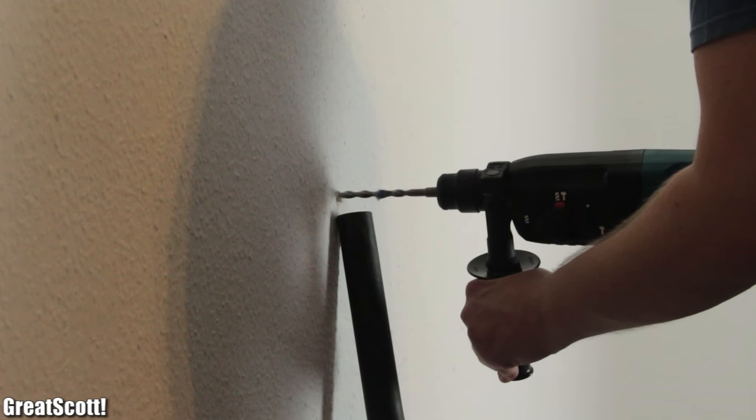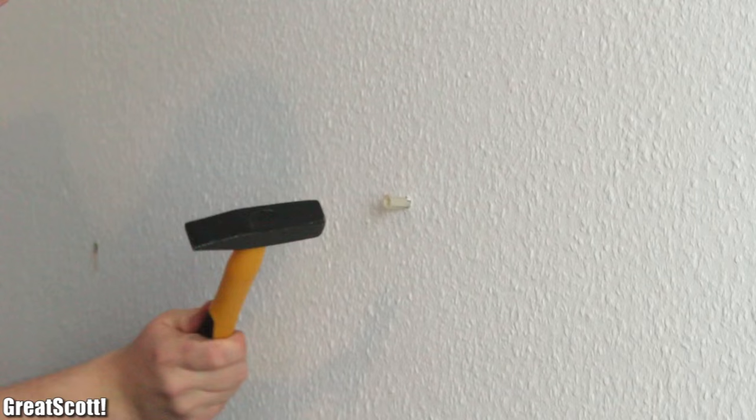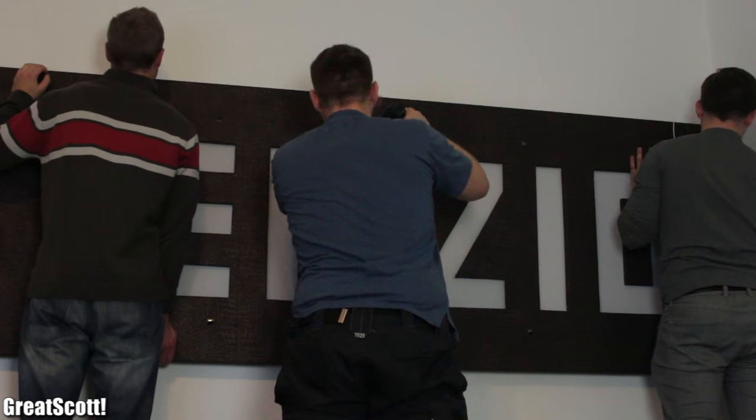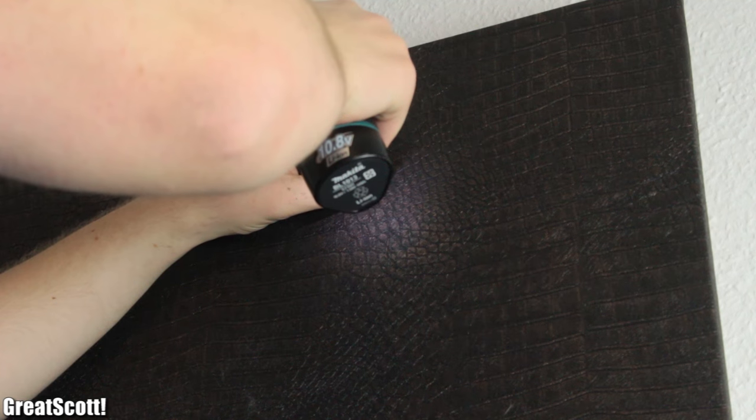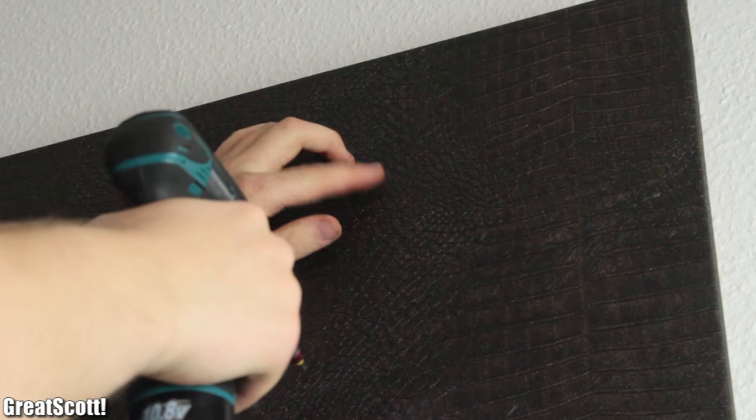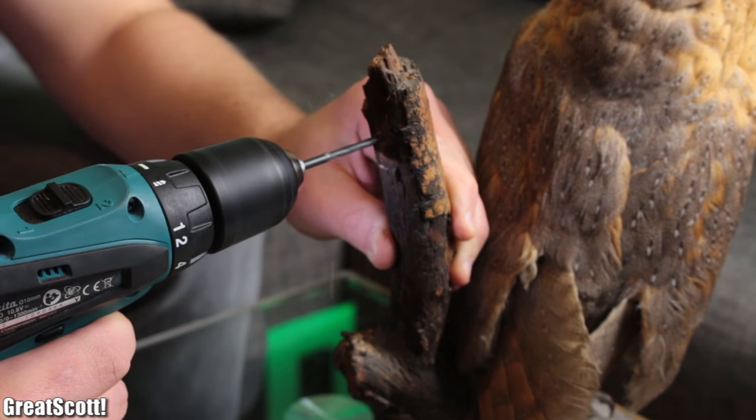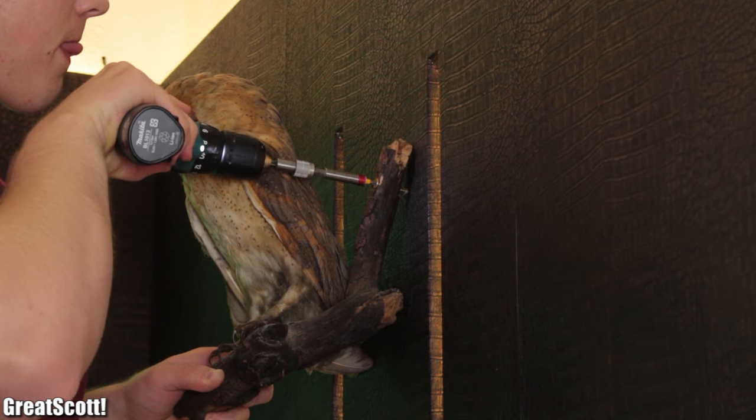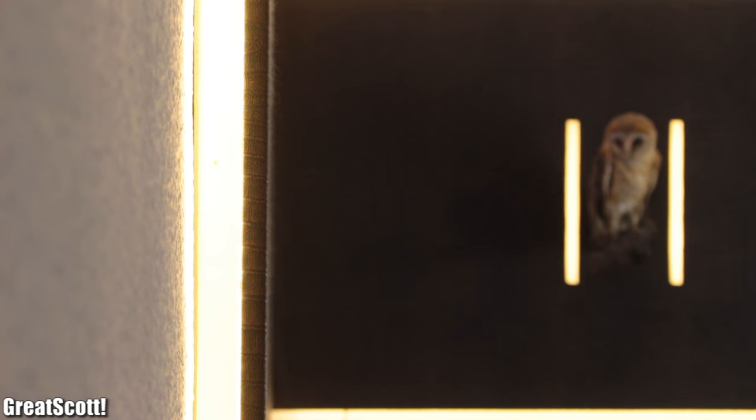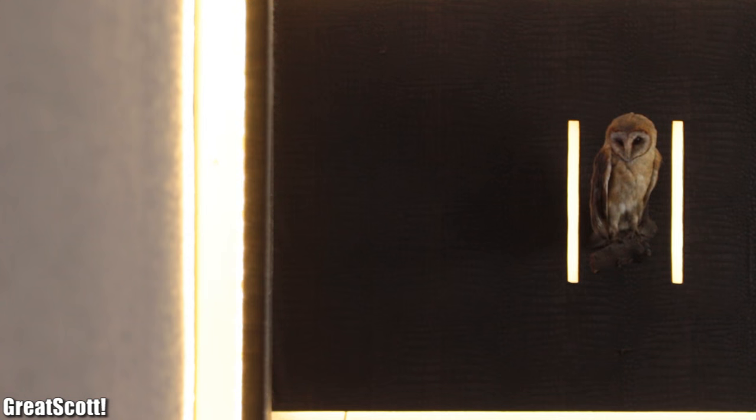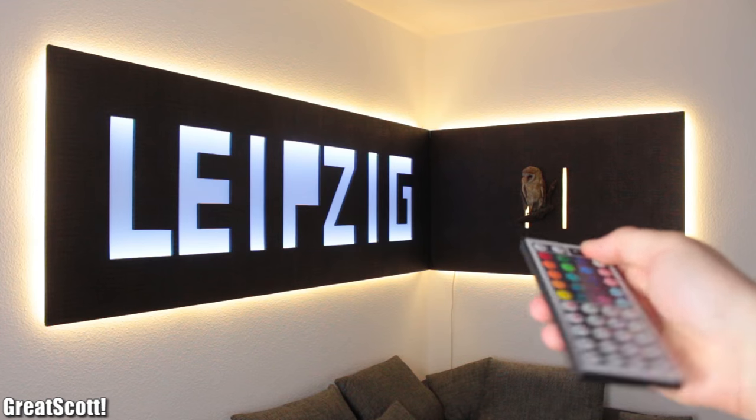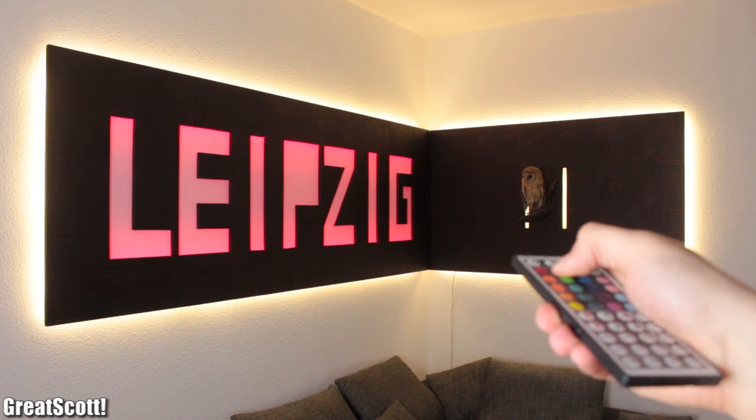For the last step we drilled holes in the wall, inserted the plastic anchors, and secured both boards very firmly with these big screws. And by using a slightly smaller screw to secure the owl in its place this project was complete. I hope you liked it and maybe it inspires you to build something similar.